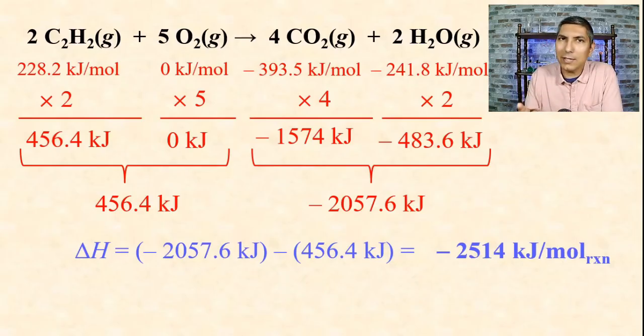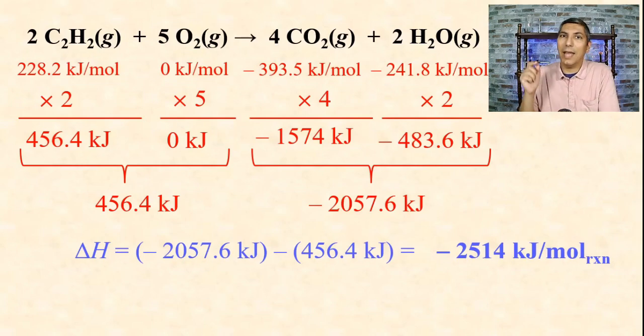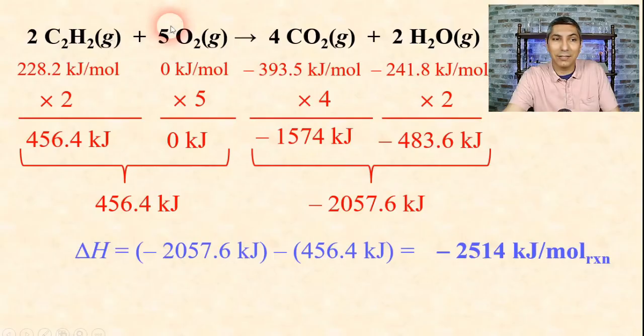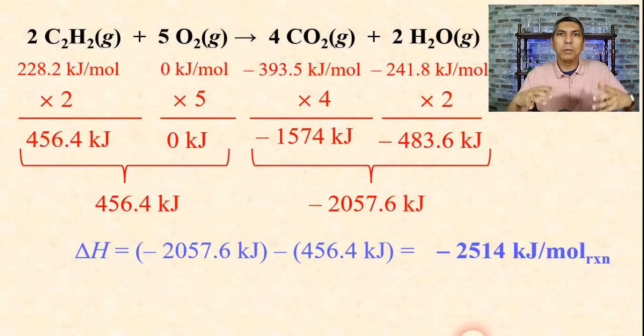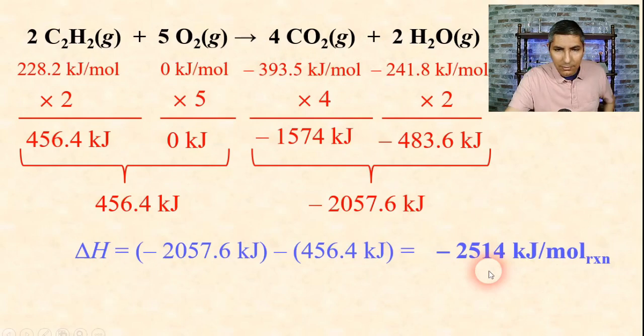What does that negative sign imply? It tells us this is an exothermic reaction, and that's going to be the case with pretty much any combustion reaction. This is telling us if you take 2 moles of acetylene gas and react that with 5 moles of oxygen gas, you're going to produce 4 moles of carbon dioxide gas along with 2 moles of water vapor. In the process of doing that, you're going to release 2,514 kilojoules of heat energy.